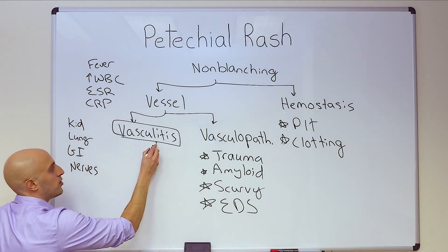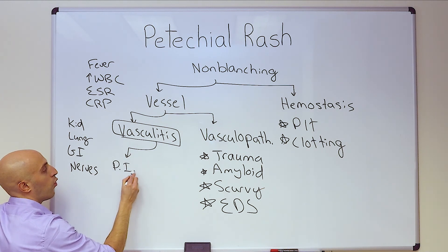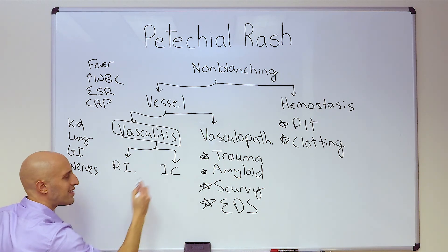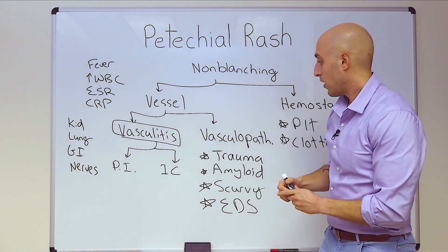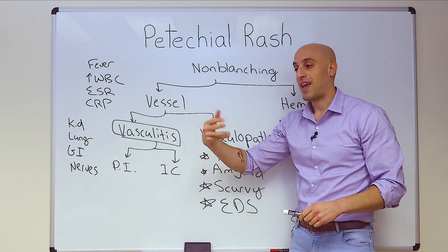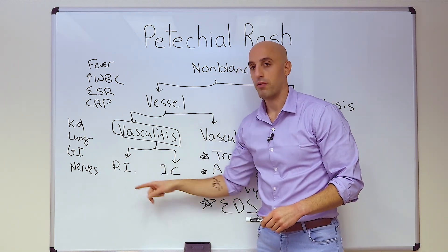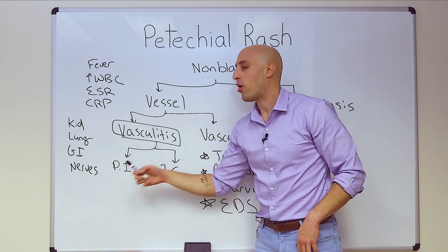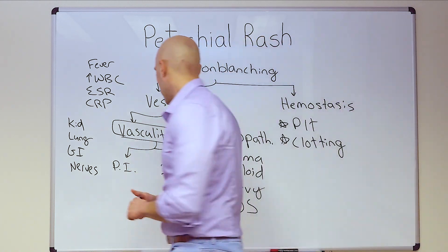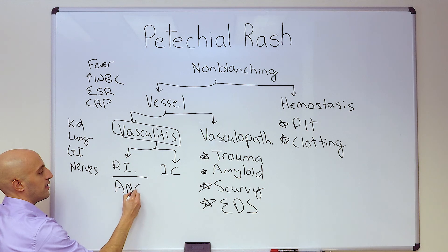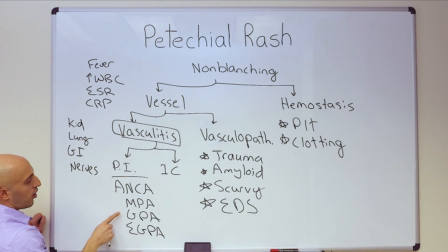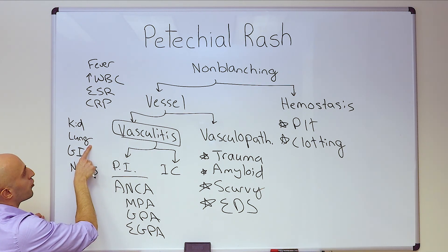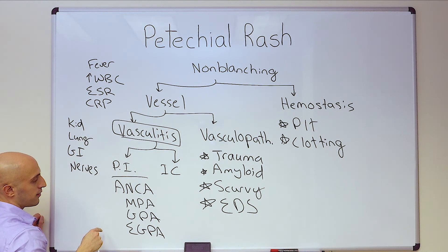What does pauci-immune mean? When you do a biopsy and study it with immunofluorescence, you're either going to see immune complexes — that's antibodies and complement — or you're not. Pauci means few, so pauci-immune means a paucity of immune complexes. This category is easy to remember because it's our ANCA-associated vasculitis, which includes MPA, GPA, eGPA, and even drug-related vasculitis. Remember — look for other organ involvement: all of these can involve the lung through diffuse alveolar hemorrhage, or the kidney through glomerulonephritis. They can even involve the nerves.